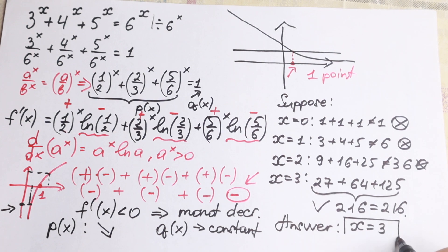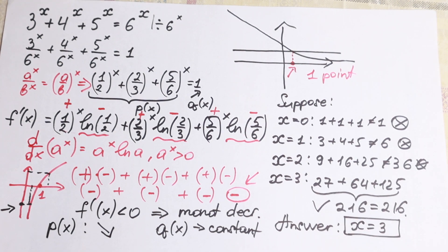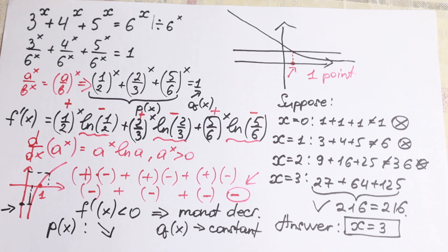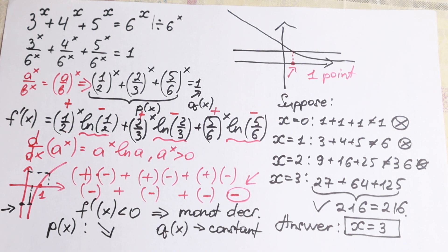So our x is equal to 3, and this is the one and only root. We hope you understand this explanation. This is not a general method to solve this kind of exponential equation, but if you know about derivatives, we can easily show that our left-hand function is monotonic decreasing and use that to find the unique solution. If you still have any questions, write them in a comment. Thank you so much for watching and see you in the next videos.